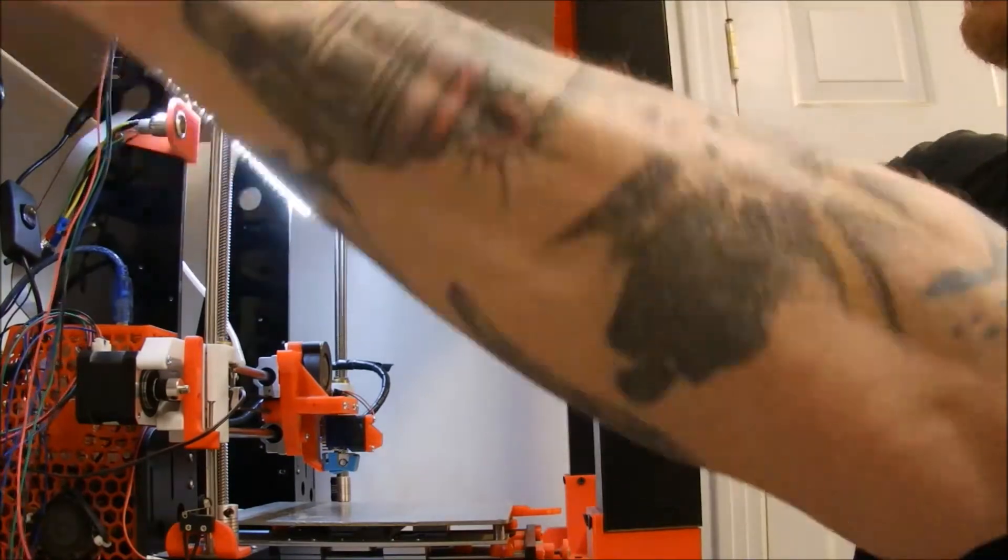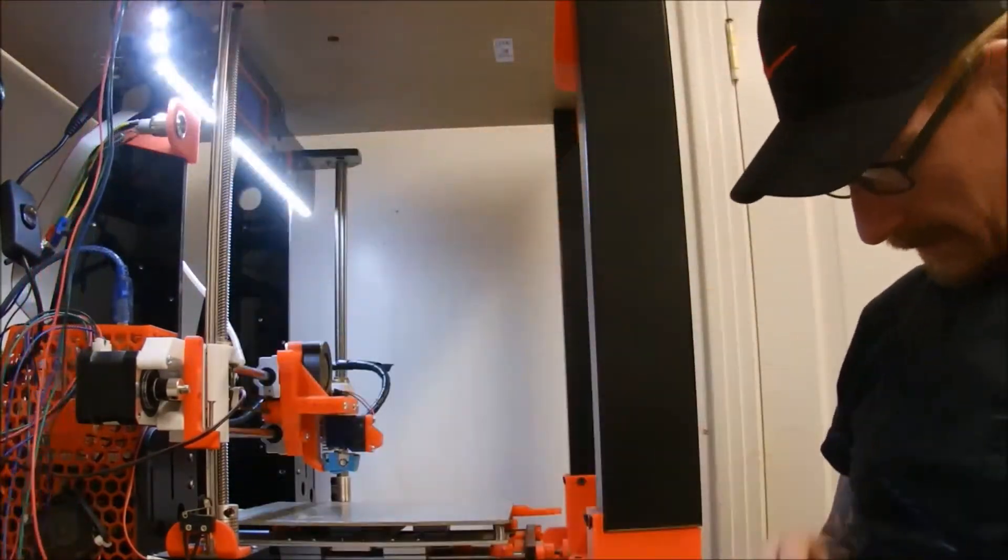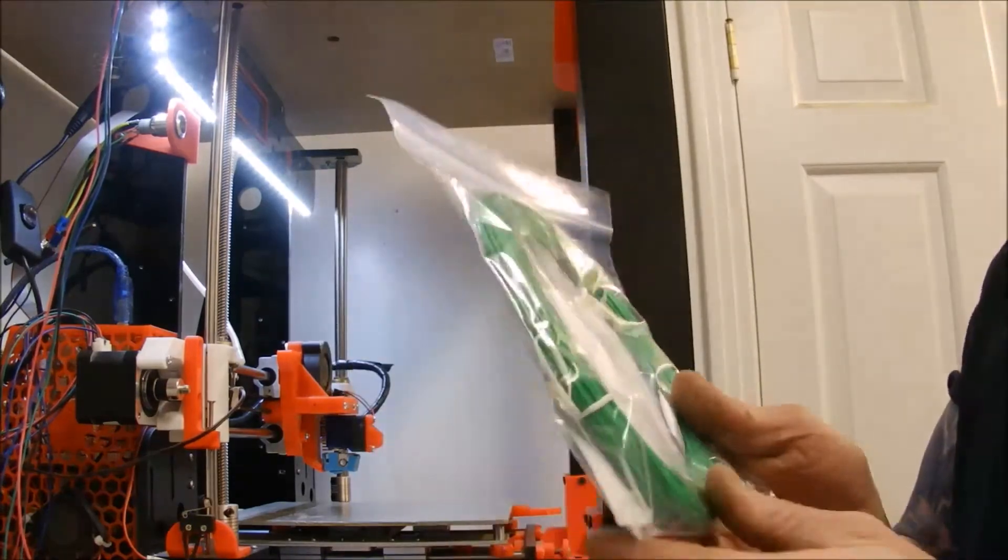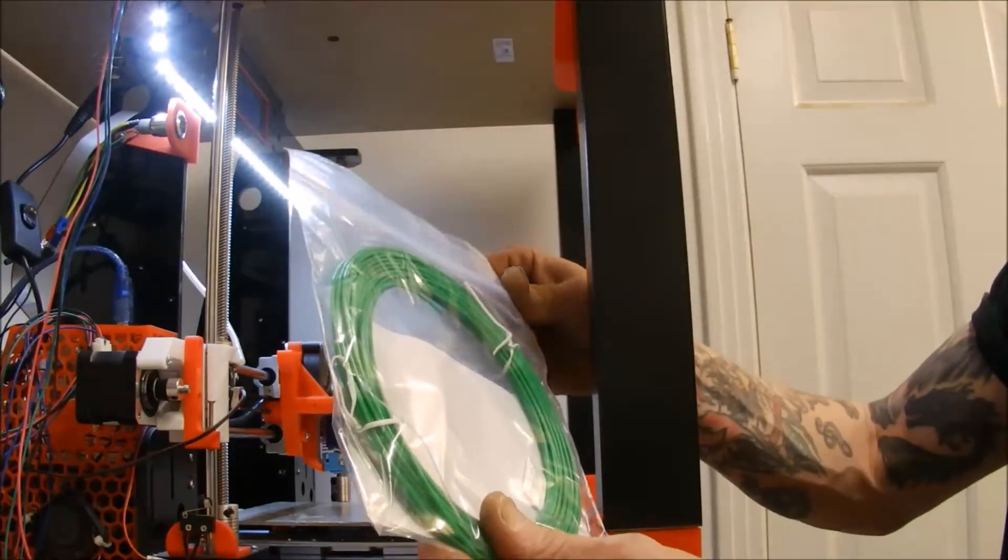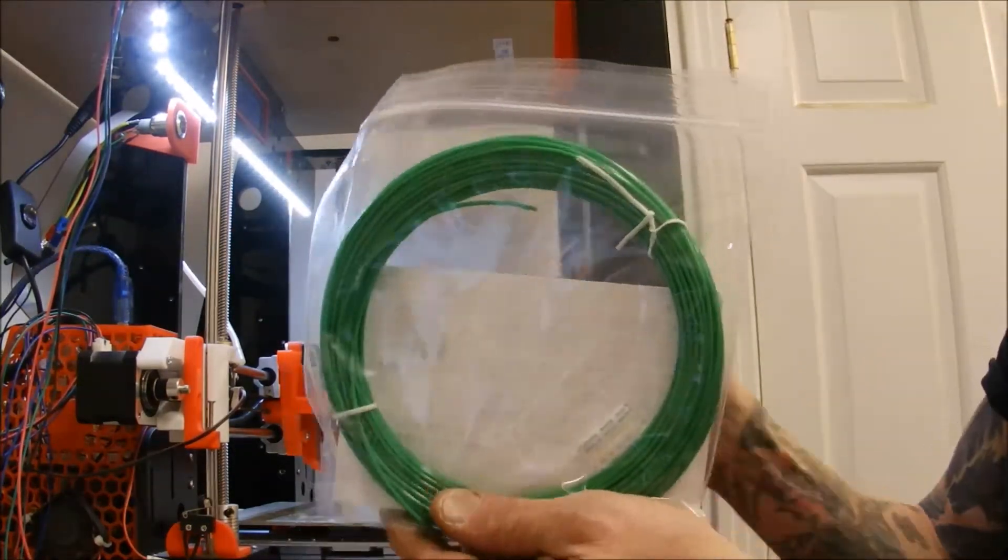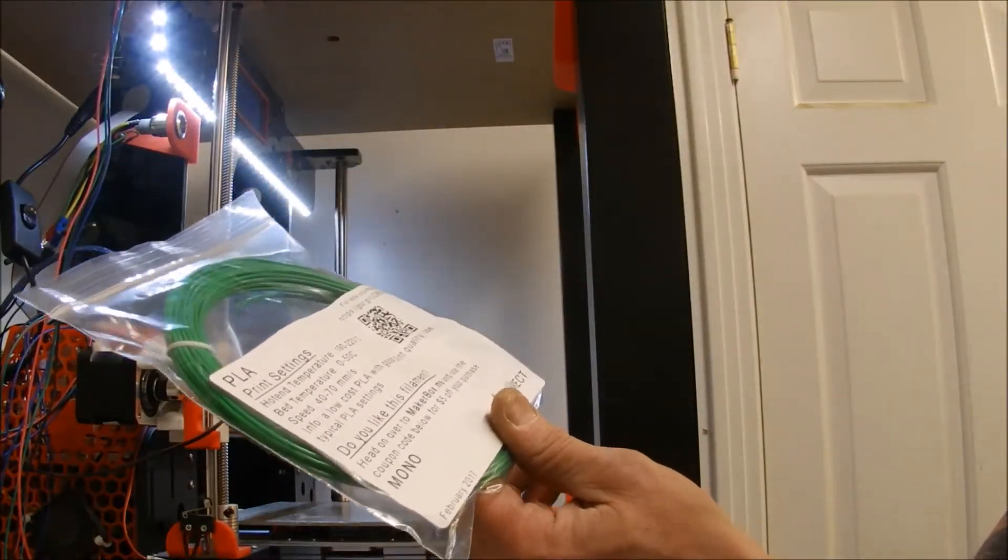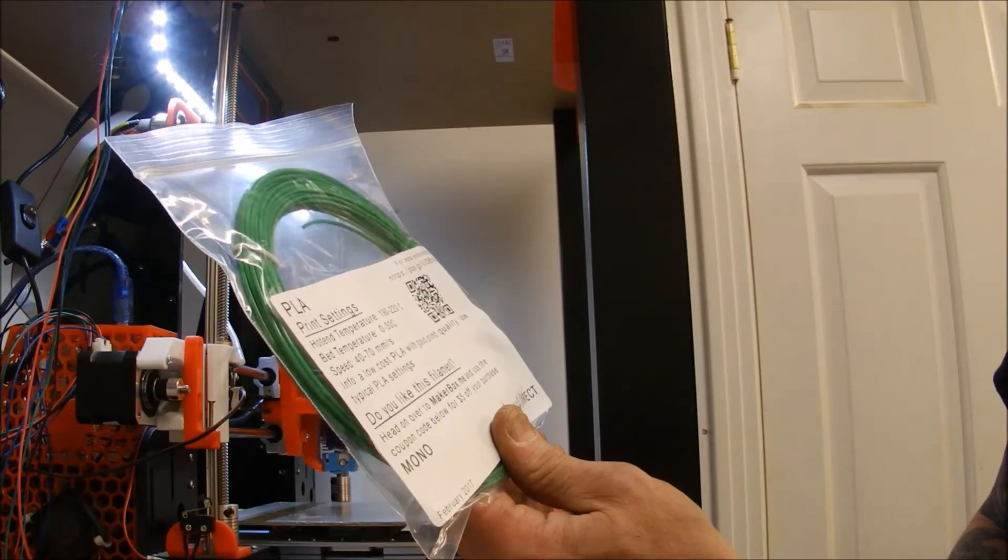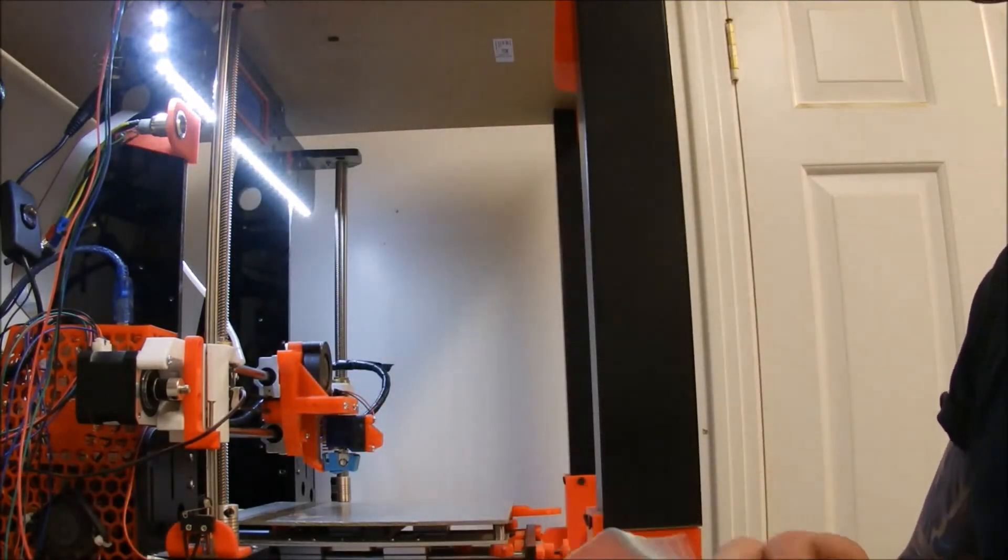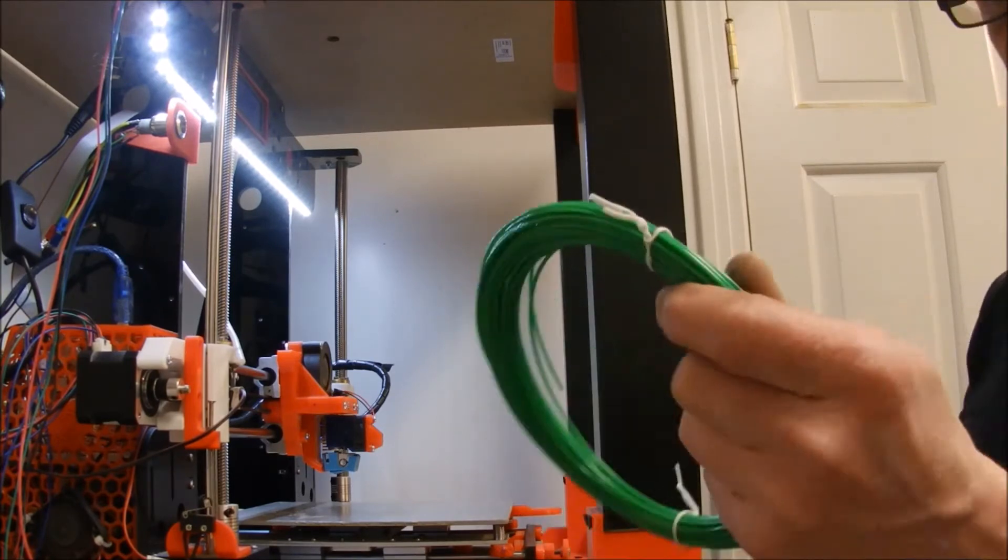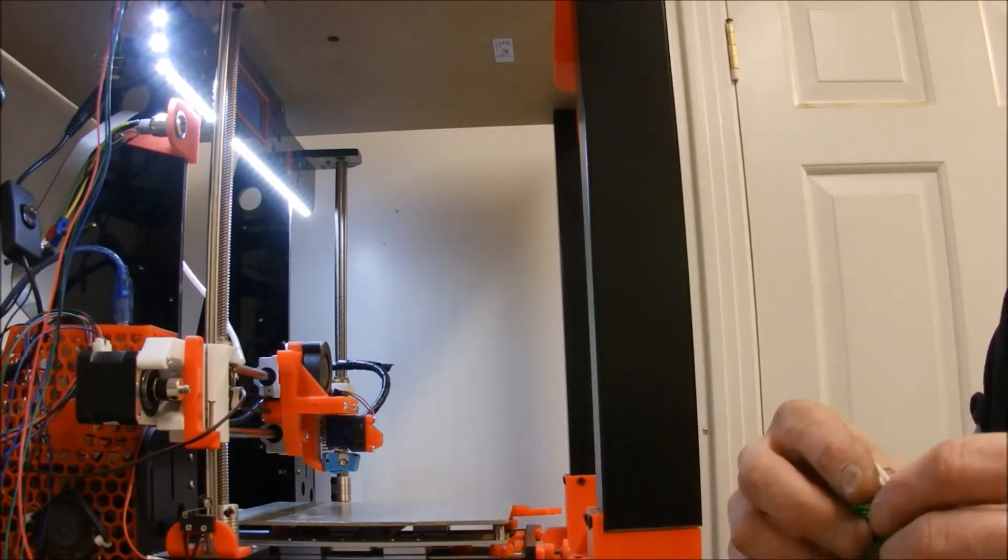All right, so the next order of business is I got looking through my Maker's Box, and I happen to have this. It's green PLA from Monoprice Filament, and it just needed to be a green turtle, so we're going to try this green PLA and see what we get.